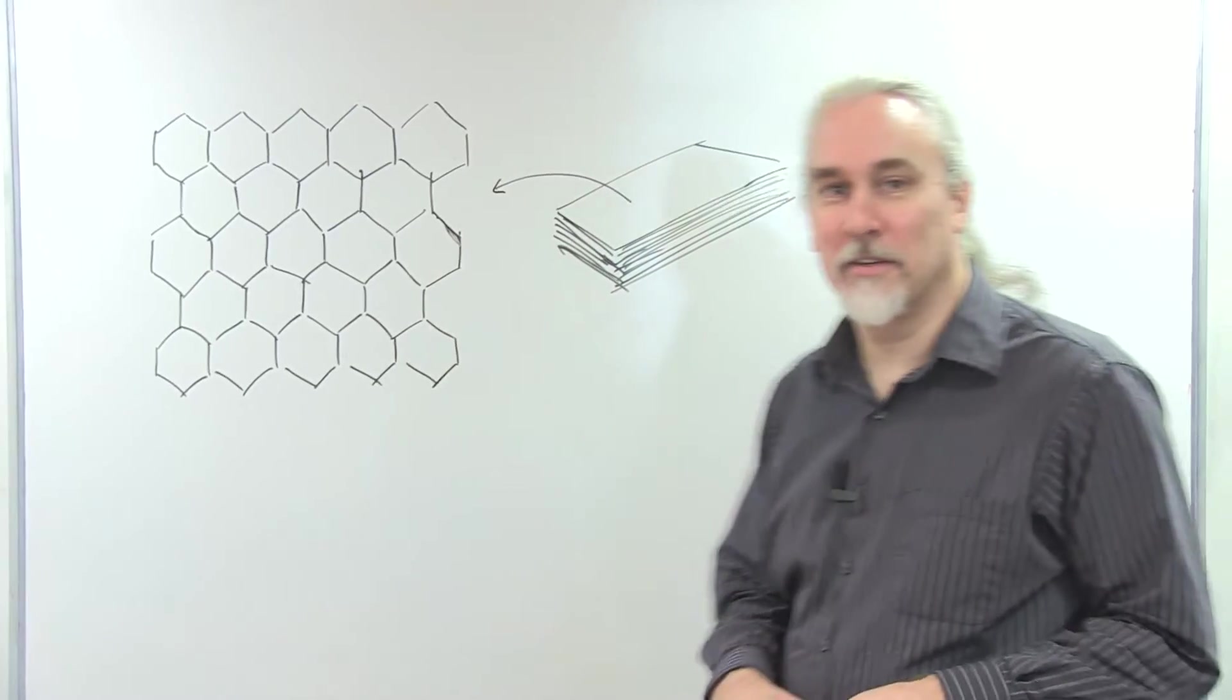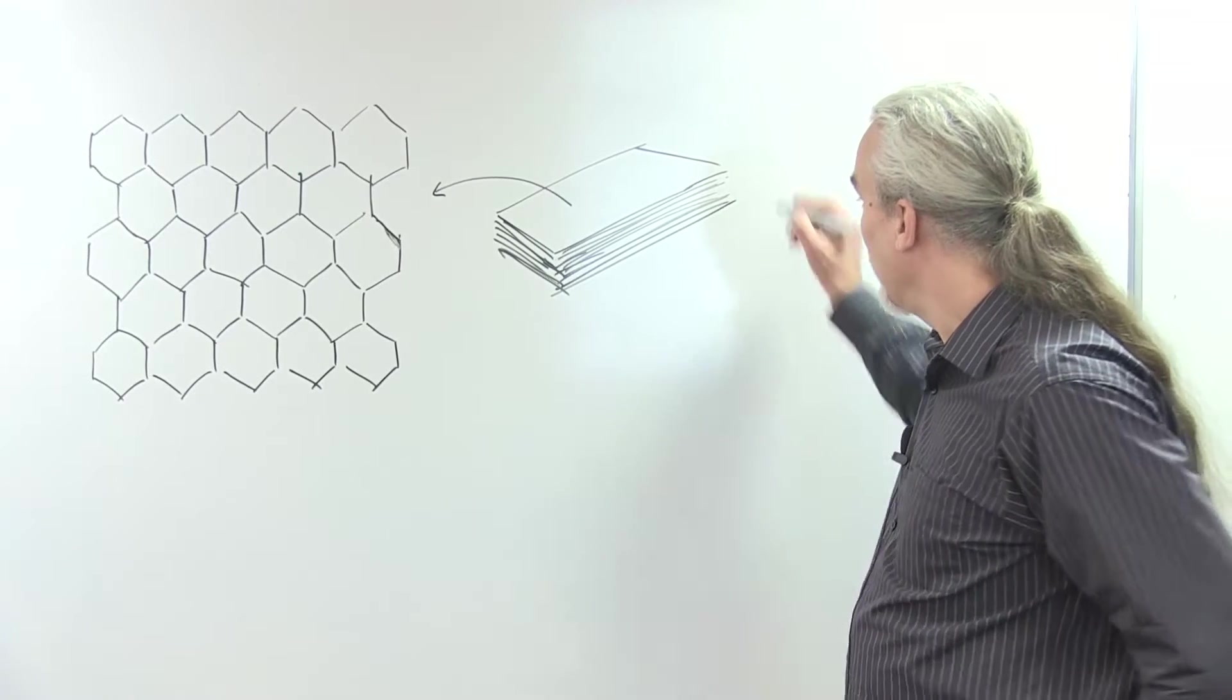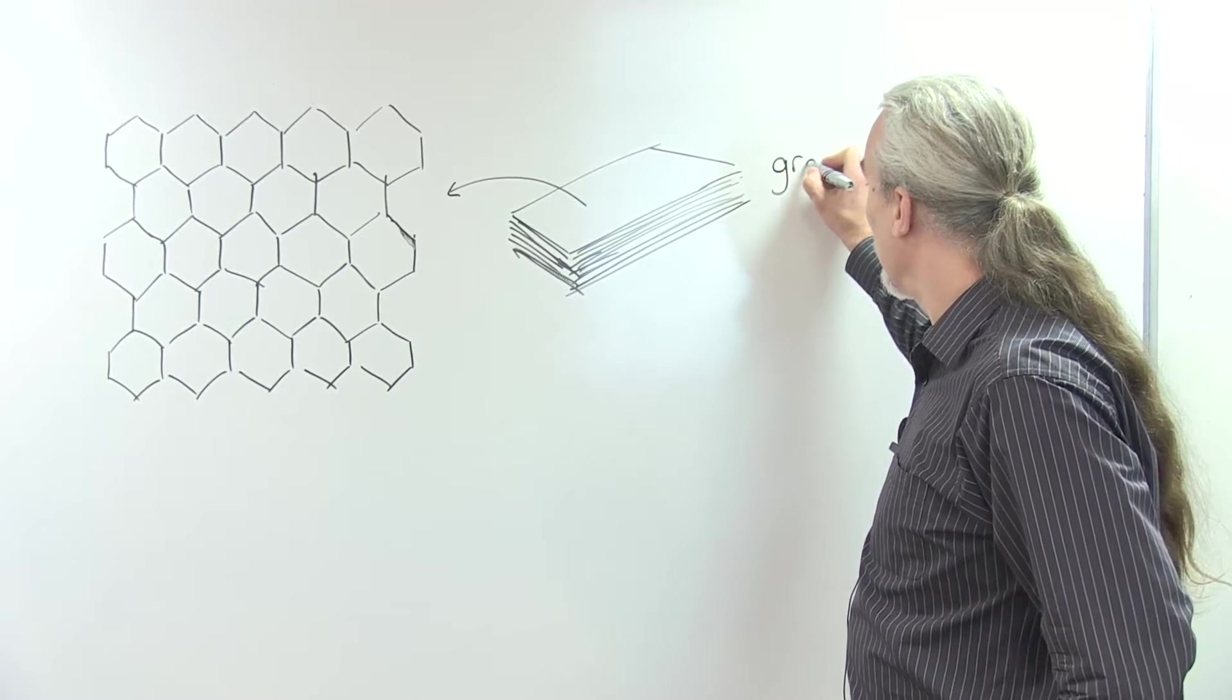So what I'm going to tell you about is a material called graphene. And so what is graphene? Graphite is a material that you might be familiar with.